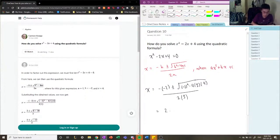If we simplify this, we got 2 plus or minus the square root of 4 minus 16, which is negative 12, and we have 2.